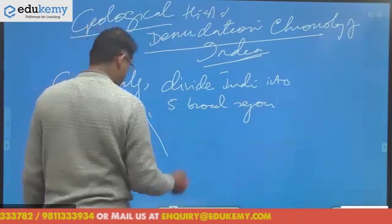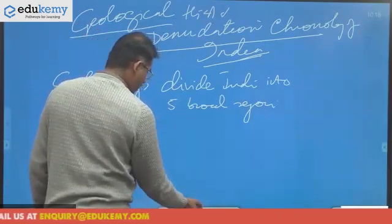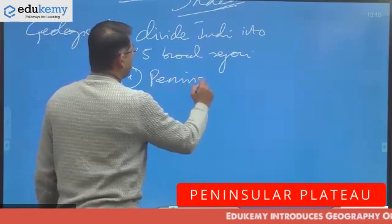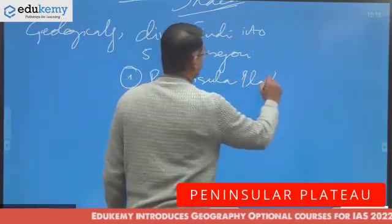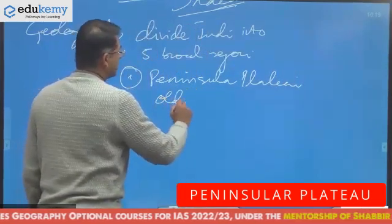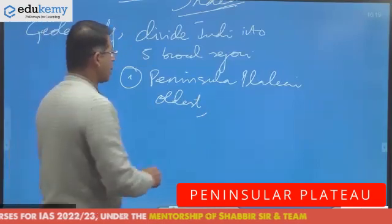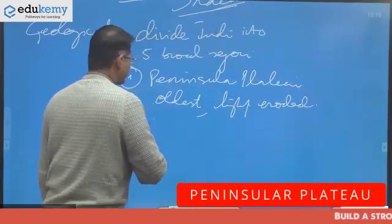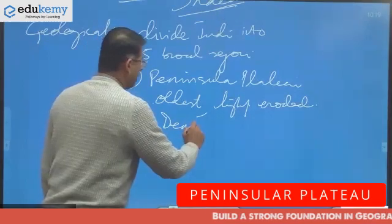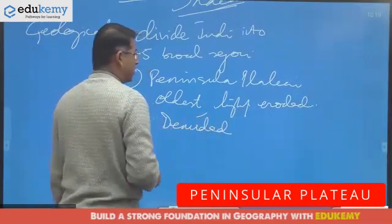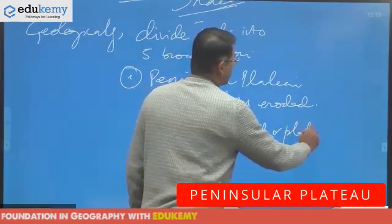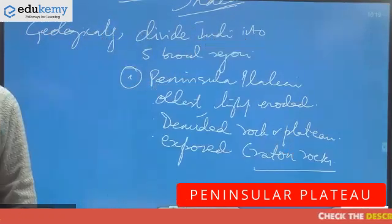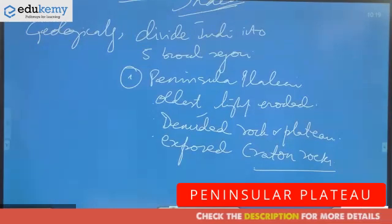The five broad regions of India start with the Peninsular Plateau, which is the oldest one — highly eroded, largely denuded rocks and plateaus. This is mostly exposed kraton rocks. What is a kraton?